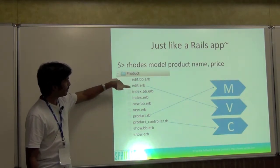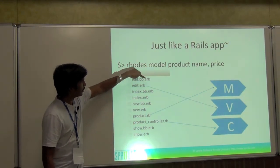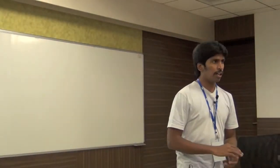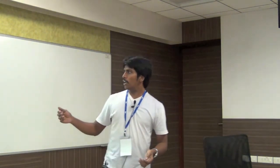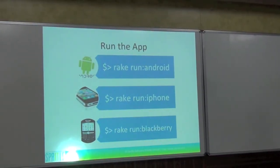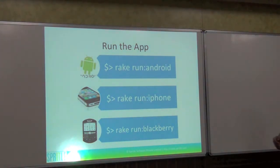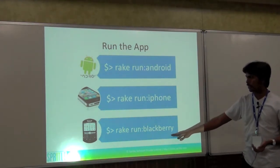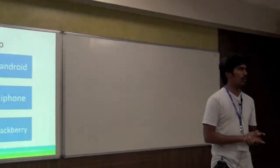In the views you can see something different — like edit.erb and edit.bb.erb, because for BlackBerry alone it's preferred to have a separate view due to HTML/CSS compatibility issues. For one project we also created edit.wm.erb because we thought it's better to create a separate view for Windows Mobile as well. If you want to run the application, you say 'rake run:android', 'rake run:iphone', 'rake run:blackberry', 'rake run:windows_mobile' and so on — the emulator will pop up and automatically install the application. For Android development, it creates a .apk file and places it to run in the emulator.